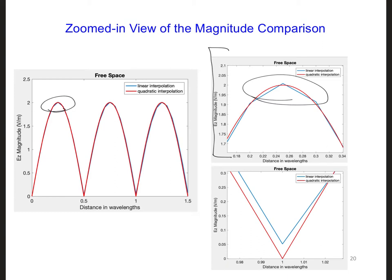And on the bottom here, where I've zoomed in on the null at one wavelength, the waveform actually reaches zero for the quadratic elements, as we would expect it to.